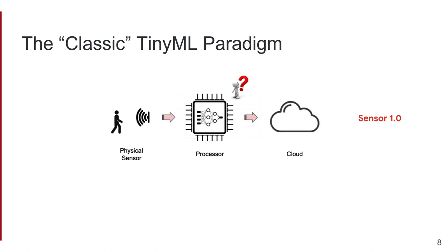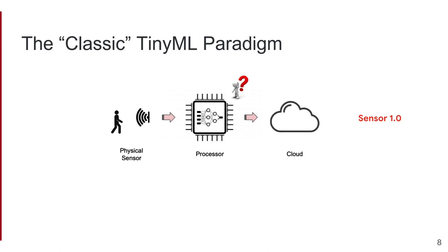It's very hard to concretely convince people that just because it has a camera doesn't mean information is leaking out. Developers also worry about how the code they've written is isolated from the ML model code. There are many questions creeping up in this traditional paradigm of how we think about machine learning sensors today.